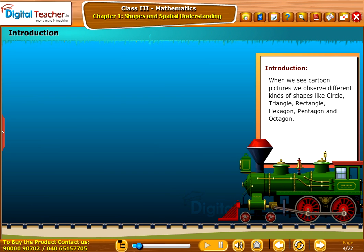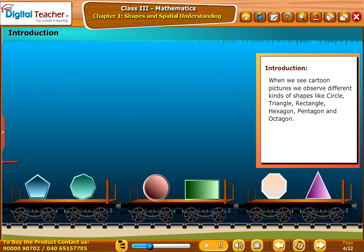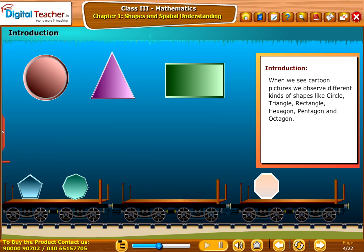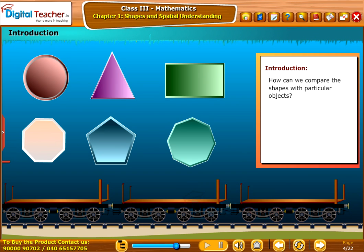Introduction: When we see cartoon pictures, we observe different kinds of shapes like circle, triangle, rectangle, hexagon, pentagon and octagon. How can we compare the shapes with particular objects? Let's find out the answers to such questions in this chapter.